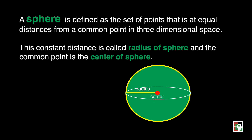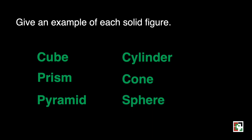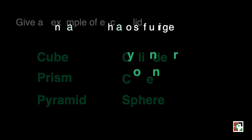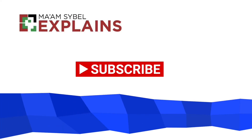Now that you know the different solid figures, it is time for you to give an example of each: the cube, prism, pyramid, cylinder, cone, and sphere. Please write your answer in the comment section down below — I'll be waiting for your answer. Thank you! Don't forget to hit the like button if you think this is helpful. Till next time!